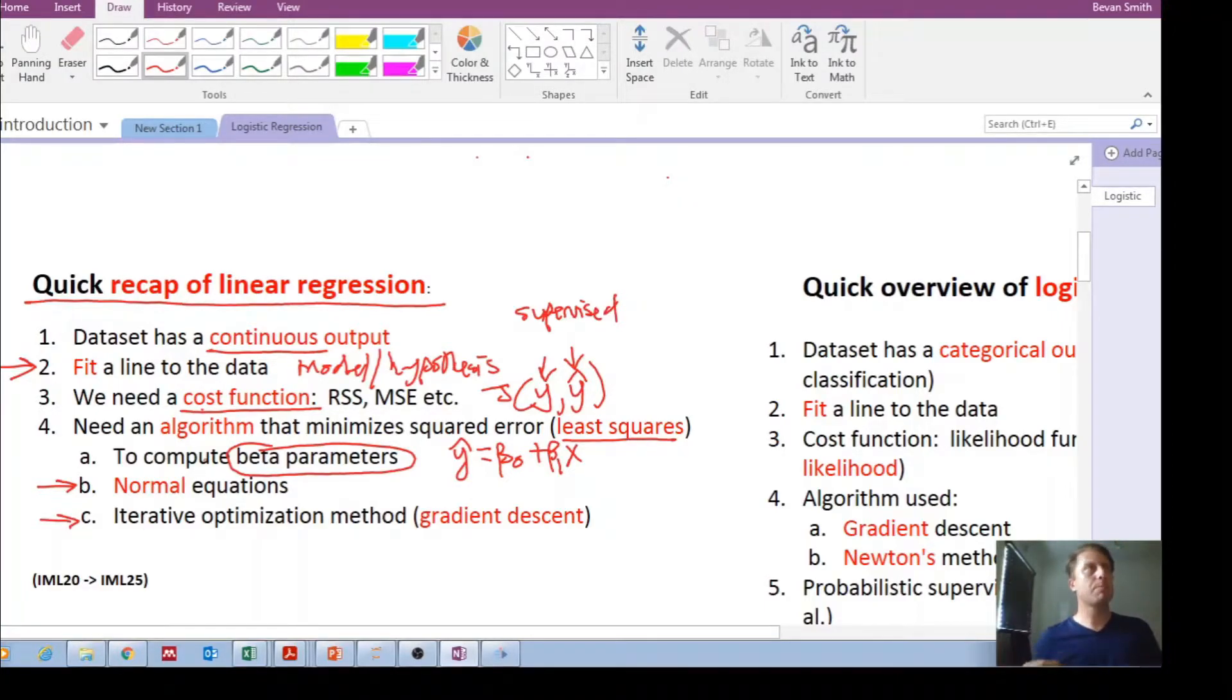The normal equations is just a matrix method to immediately solve for those beta parameters. If your normal equations are not ideal, they're not working properly, you can go look at all these videos. Go check out all these videos on the channel, iML20 to iML25. Those are all the videos I made on linear regression to get a recap of this whole thing.